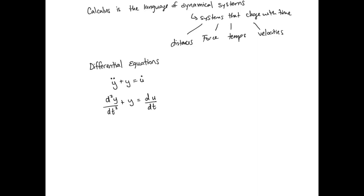Another way of writing that same equation is using primes: y-double-prime plus y equals u-prime. So there are a lot of different ways of denoting differential equations. There's also the solution to a differential equation — in this case, you could have y(t) equal to t² + 2t, for example. Here, y is the name of the function, t is the variable that y depends on, and we look at how changing t changes y.